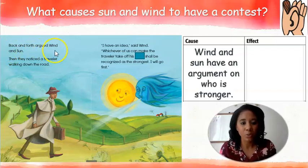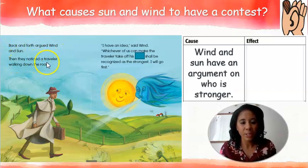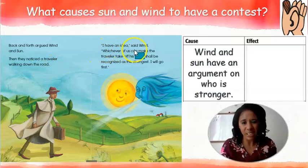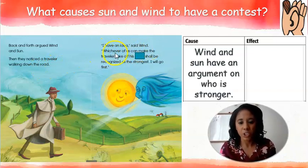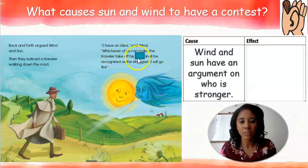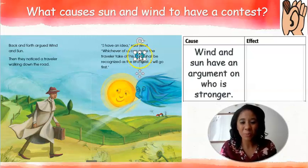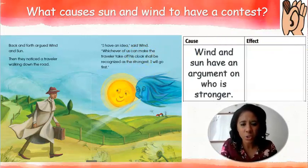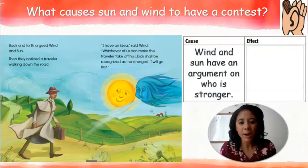Back and forth argued wind and sun. Then they noticed a traveler walking down the road. 'I have an idea,' said wind. 'Whichever one of us can make the traveler take off his cloak shall be recognized as the strongest. I will go first.'